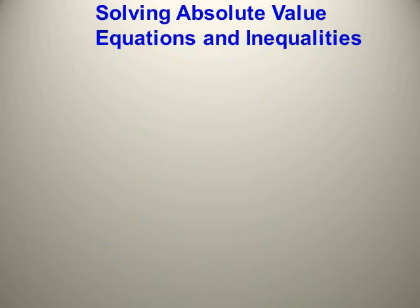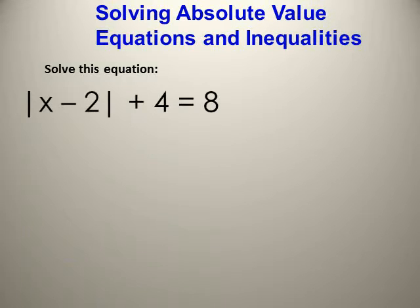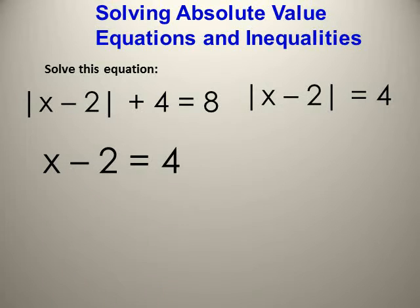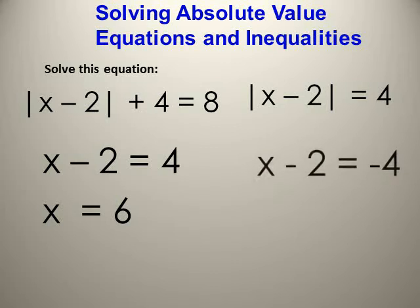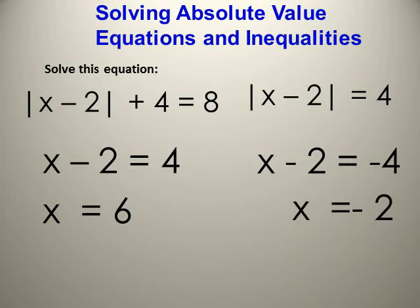Another example: |x − 2| + 4 = 8. First, isolate the absolute value: |x − 2| = 8 − 4 = 4. Then x − 2 = 4 or x − 2 = −4. First equation: x = 6. Second: x = −2. The solution set equals {6, −2}. Substitute to verify: the value of the absolute equals 4 in both cases.